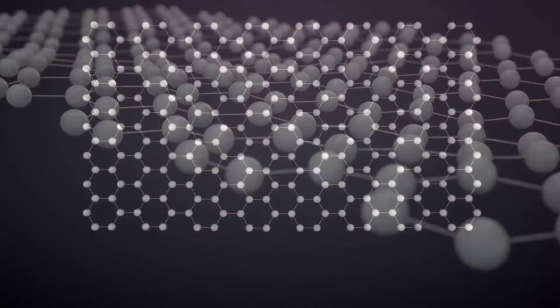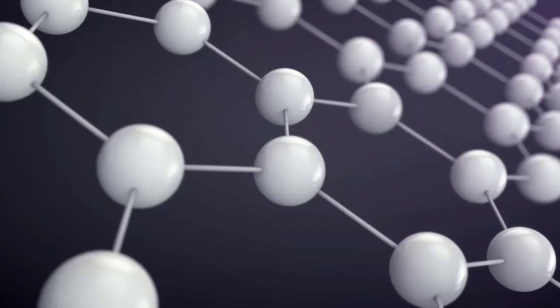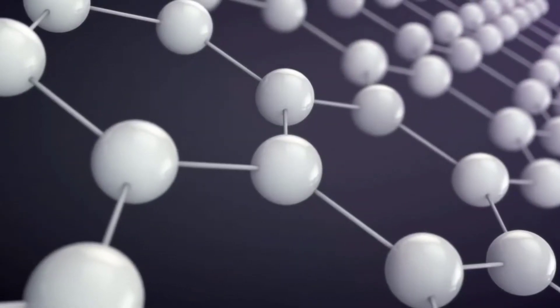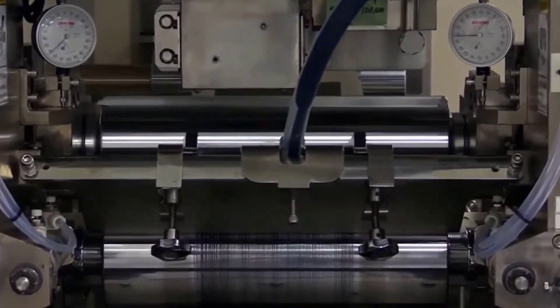First and foremost, graphene is a highly efficient electrical conductor. Furthermore, graphene is a very strong substance that is both flexible and lightweight. Graphene has 200 times the strength of steel while weighing only a quarter of the amount. So how is graphene used in battery technology?